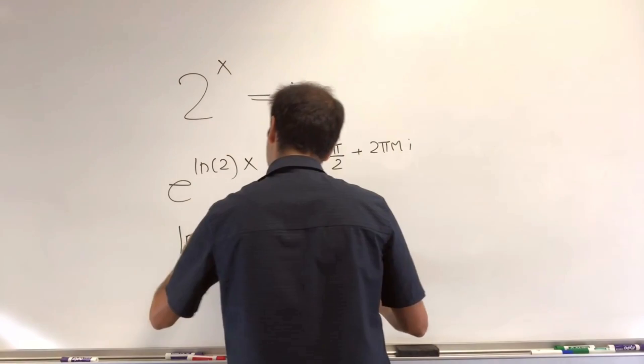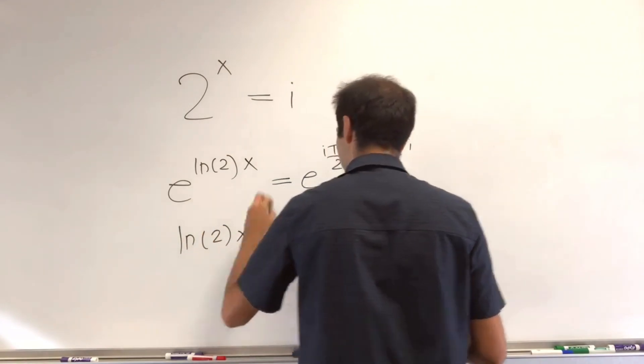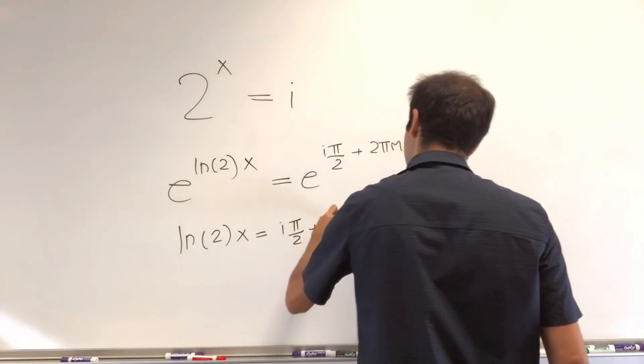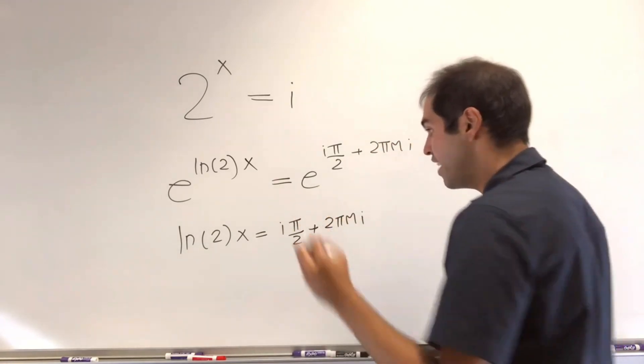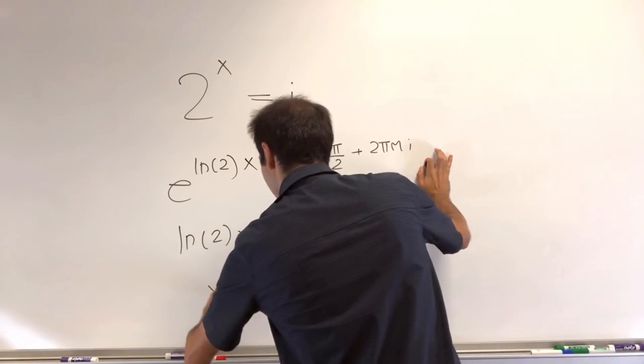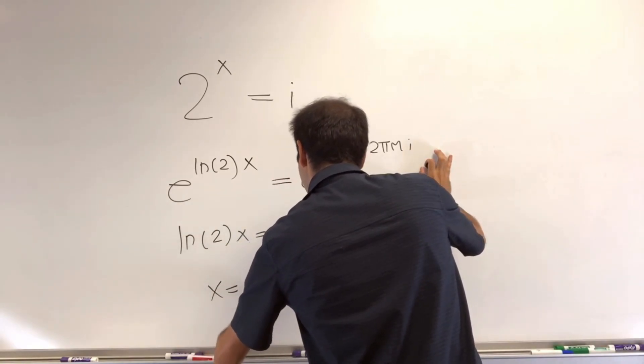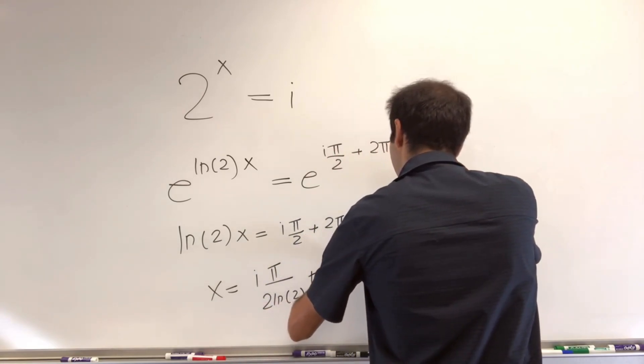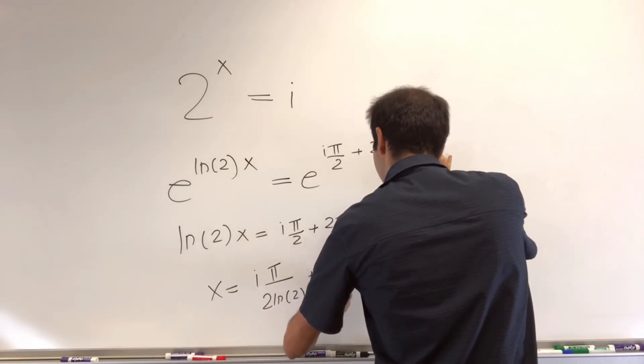So then you get ln of 2x equals i pi over 2 plus 2 pi mi, and therefore x is just i pi over 2 ln of 2 plus 2 pi mi over 2 ln of 2.